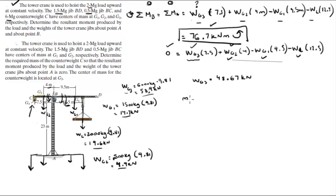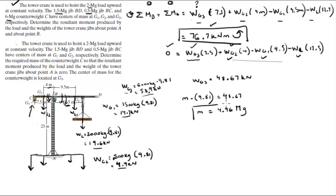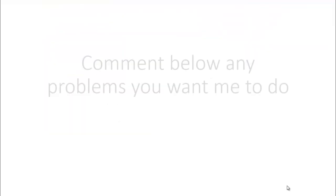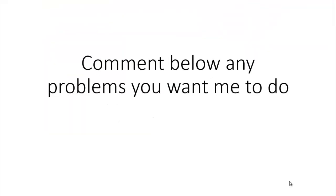Since wg3 equals mass of g3 times 9.81 m/s² = 48.67 kN, solving for m gives a mass of 4.96 megagrams. That's the final answer for the second part, and 76.7 kN·m is the final answer for the first part. Please comment below if you want me to do any problems and I'll be happy to help — thank you.